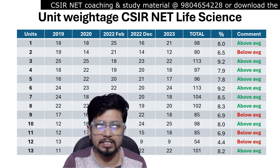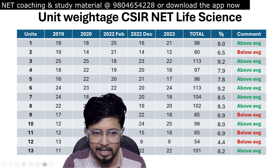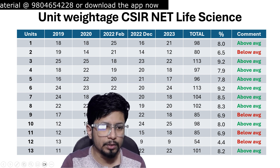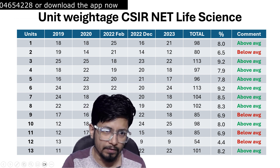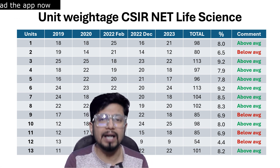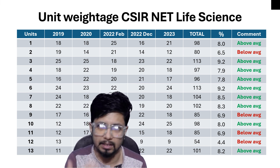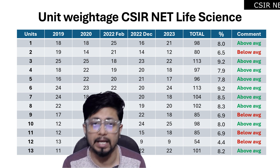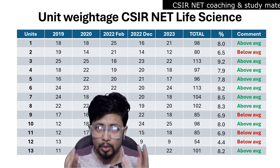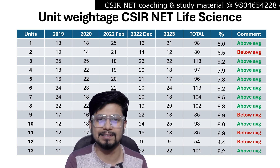The above average units are Unit 1, 3, 4, 5, 6, 7, 8, 10, and 13. There are 4 below average units: Unit 2, 9, 11, and 12. For those asking which 8 or 9 units to prepare, focus on all the above average units. You can exclude these 4 below average units and prepare the remaining 9, since the number of questions from those units is much higher.